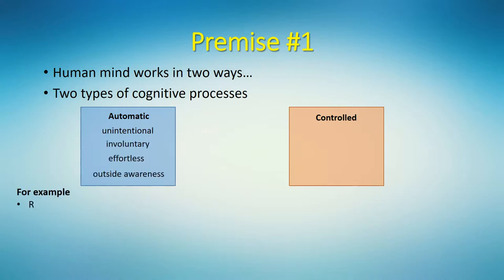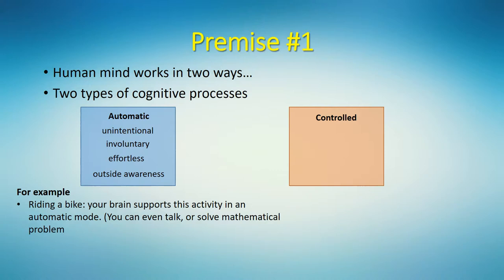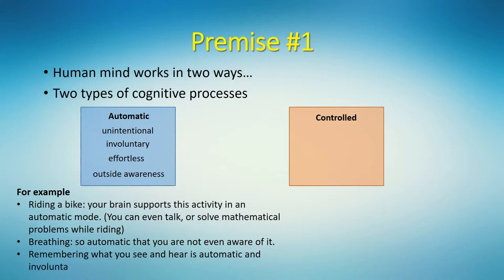For example, riding a bike is an activity that you perform without thinking, without any cognitive effort at all. Your brain supports this activity in an automatic mode. In fact, the process is so automatic and effortless that you can even talk or solve mathematical problems while riding. Breathing is so automatic that you are not even aware of it. Remembering what you see and hear is automatic and involuntary because you cannot just stop remembering.